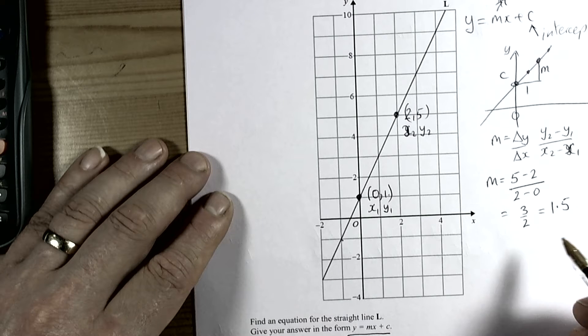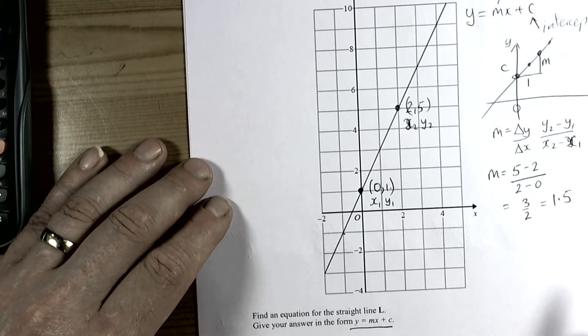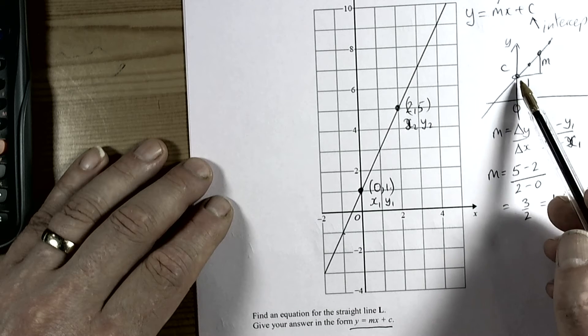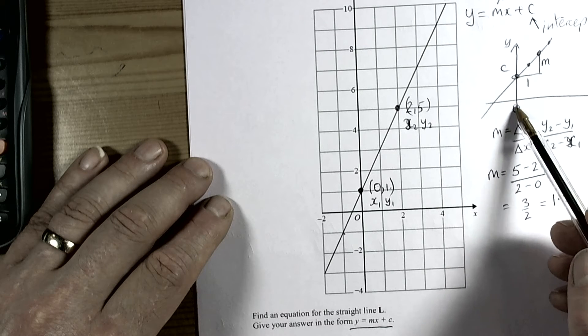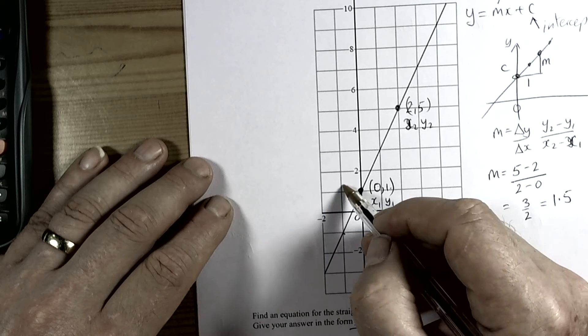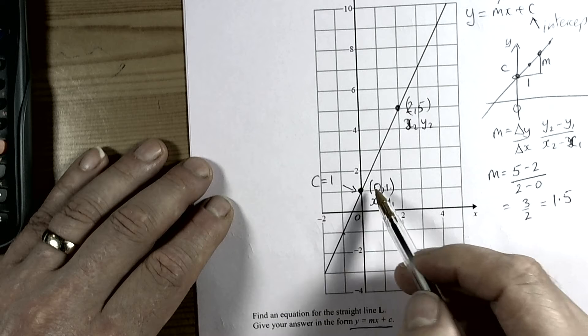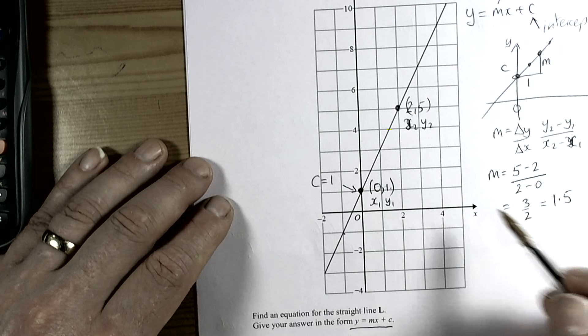Quite often with gradients, it's better to leave them as fractions, but we'll leave it as a decimal in this particular case. The c value, the intercept point, is when x is 0. Well, we've already got that, so this coordinate here tells us that the c value is 1. It's the y part of the coordinate where x is 0.